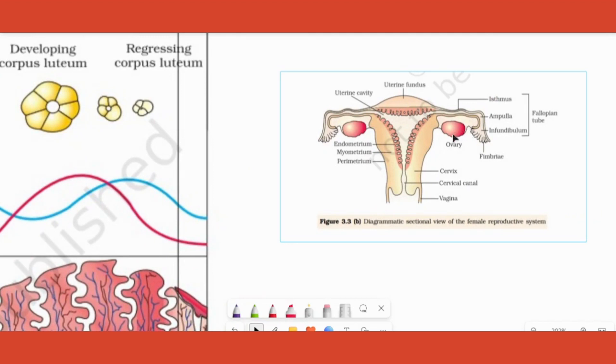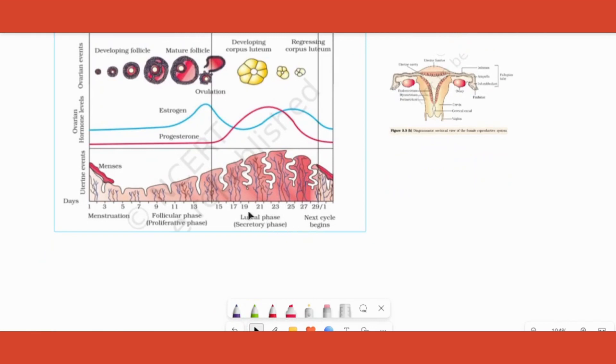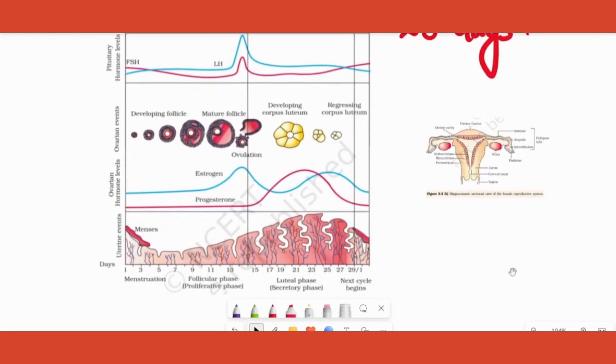But in the ovary part, ovulation has happened. Ovum is already removed out from the ovary. Now after it is removed, what happens to the Graafian follicle? It changes into a yellow mass called as corpus luteum. And therefore this phase has the name luteal phase.